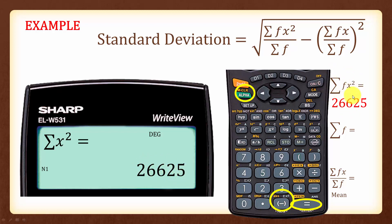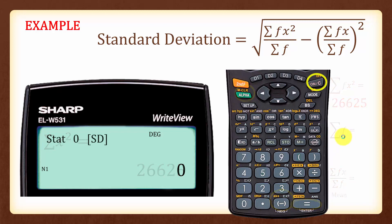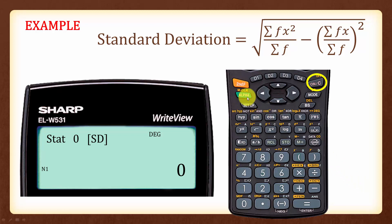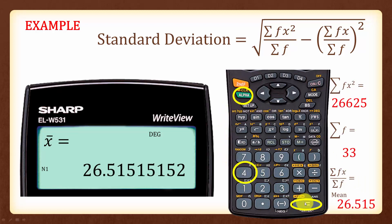The symbol for summation of fx squared on the calculator is shown on screen. Next, find the total frequency by pressing Alpha, 0, followed by Equal — the total frequency is 33. The symbol for total frequency on the calculator is the letter n. Finally, find the mean by pressing Alpha then Equal to get 26.515 recurring. The symbol for mean is x with a line above it.